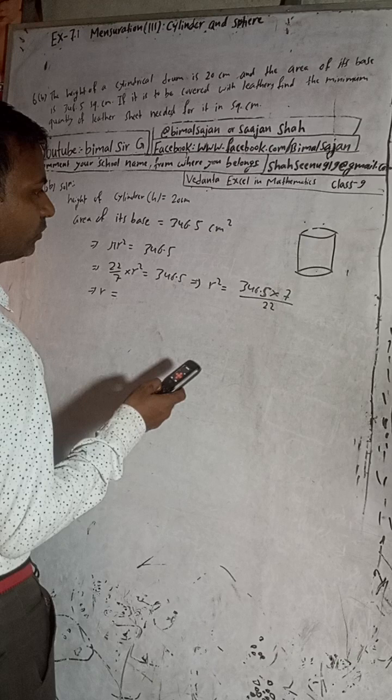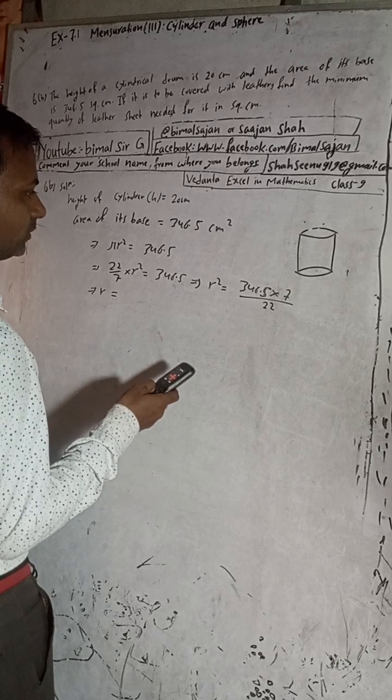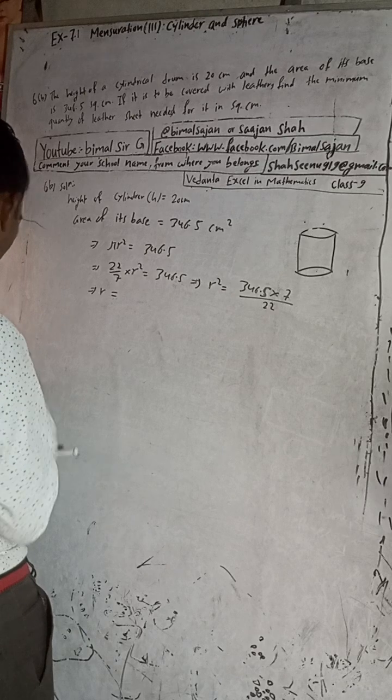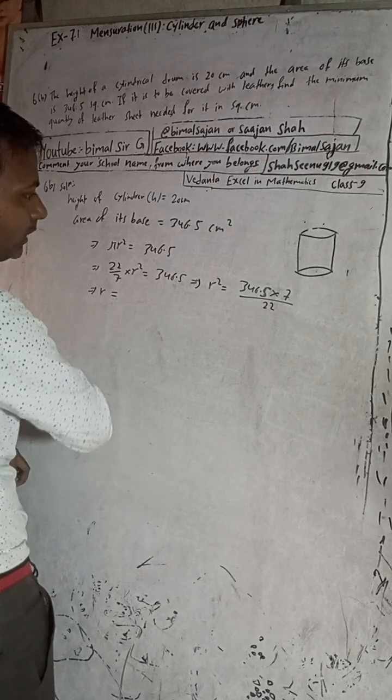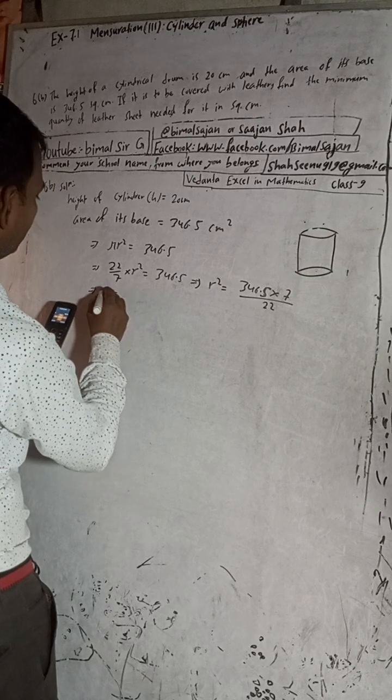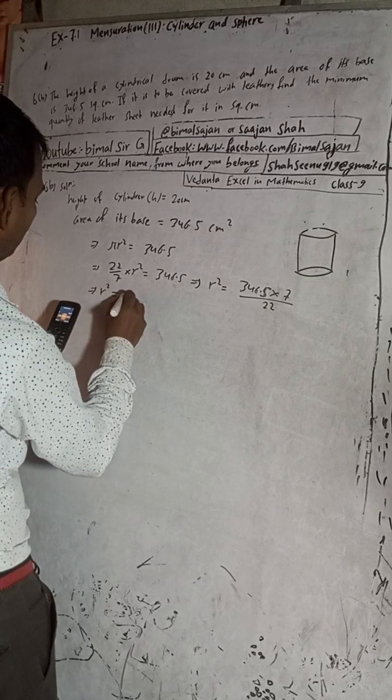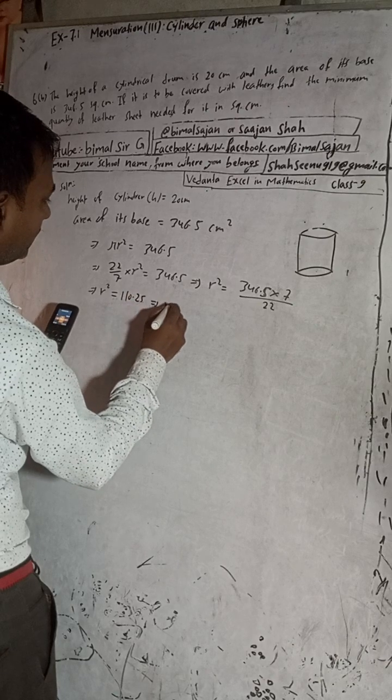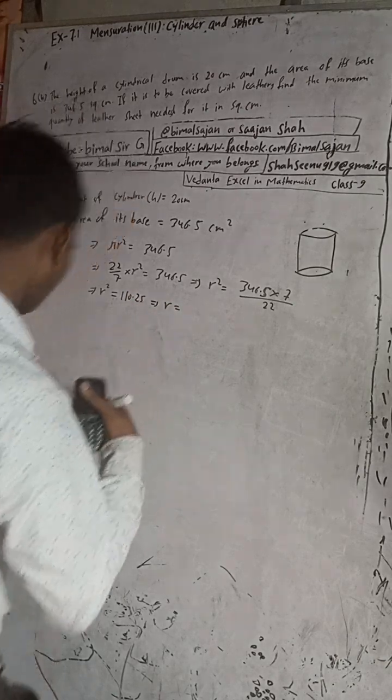So we have to find the square root. We got r² = 110.25. This implies r = √110.25.